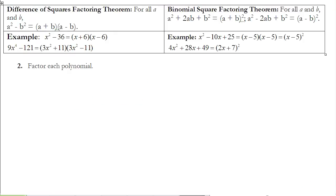The second thing to look for when factoring is special cases. A lot of times you'll be able to look at a polynomial and may not be able to factor out a monomial, so the next thing to try is special cases. There are two: the difference of squares factoring theorem and the binomial square factoring theorem.